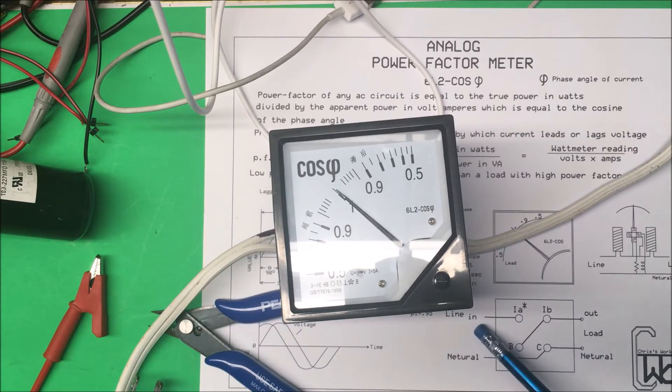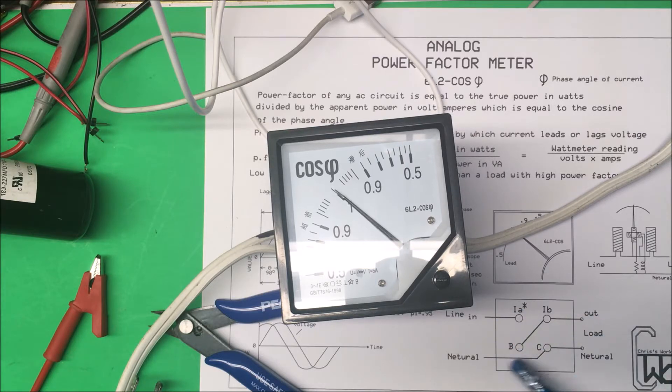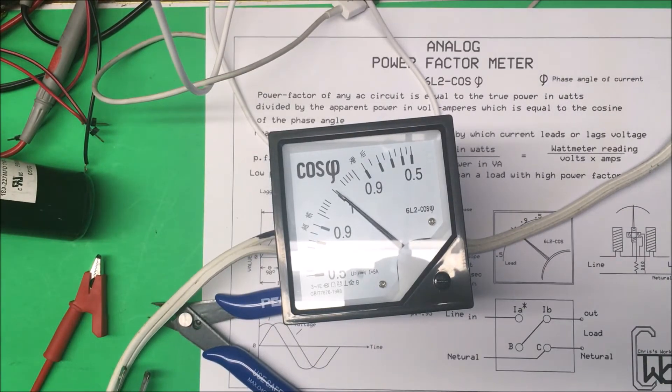Your line goes to IA, comes out of IB, and this is going to be your current here. Your neutral ties to C and we're picking up our voltage on B here off of the output.